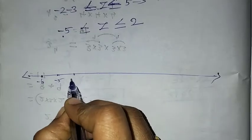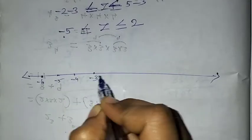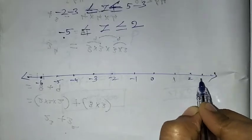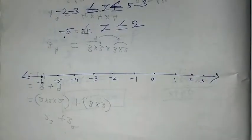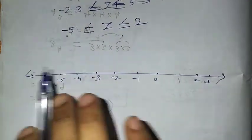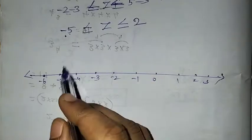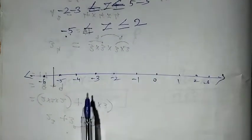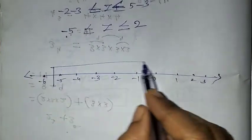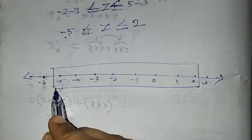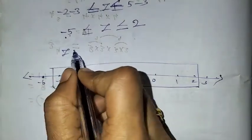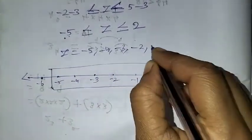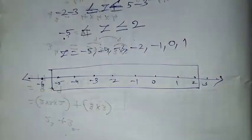So we have minus 5 as the lower bound. The integer values on the number line are: minus 5, minus 4, minus 3, minus 2, minus 1, 0, 1, 2. So the value of z ranges from minus 5 to 2.